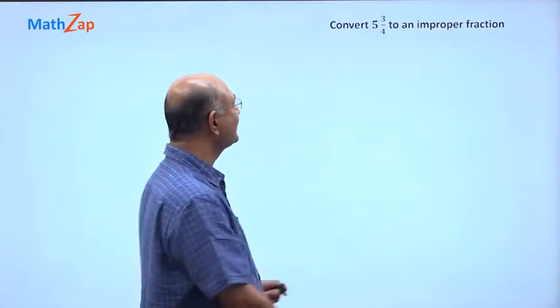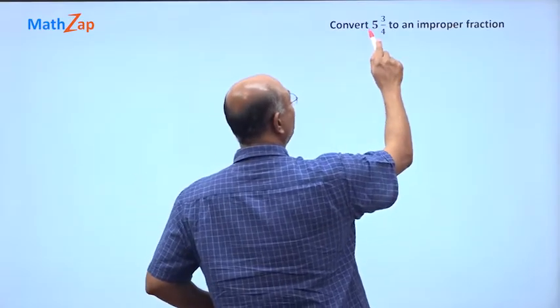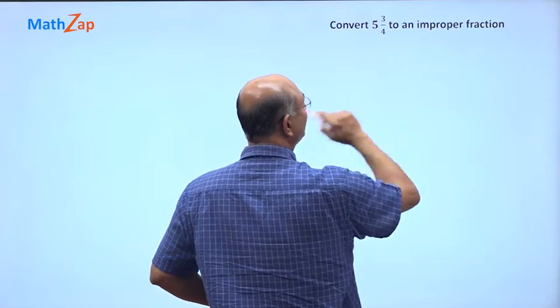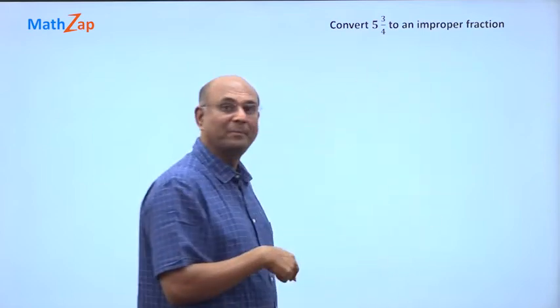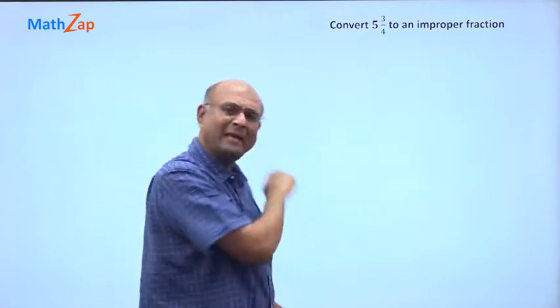Let us now look at this question. Convert 5 and 3 by 4 mixed fraction into an improper fraction. What is 5 and 3 by 4?